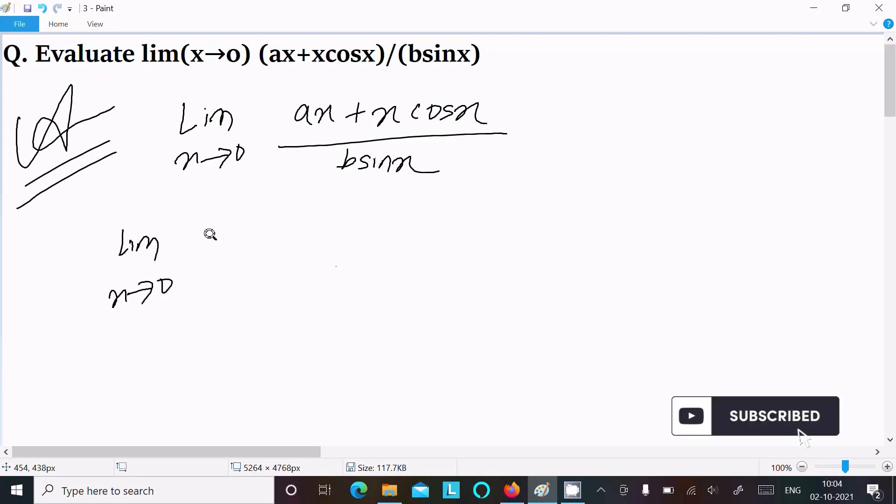First, we need to factor out x as common. Then you can get x(a + cos x) divided by b sin x.